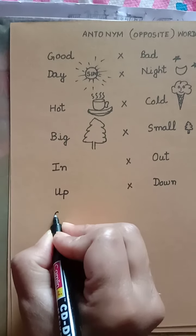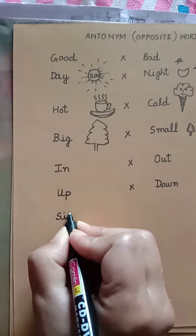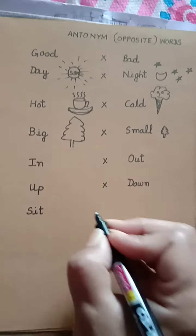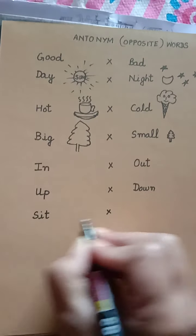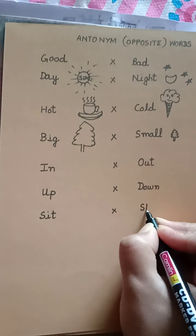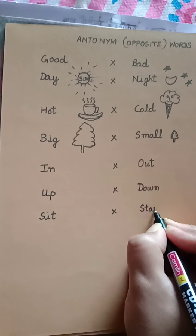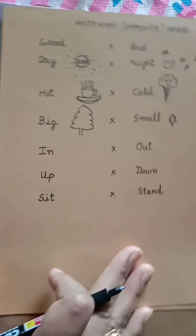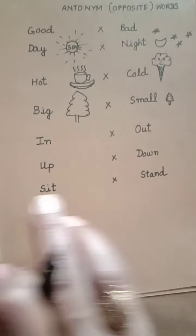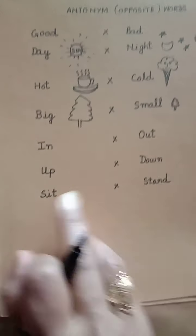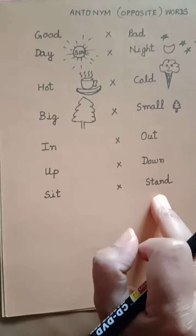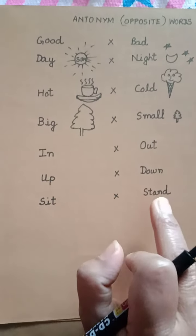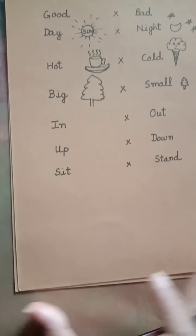Now we have the word S-I-T, sit. Sit means bait na. The opposite of the word sit is stand. Stand means khade hona. We say: sit down and stand up. Sit down means neiche baito. Stand up means upar khade ho. So, stand means khade hona and sit means bait na.